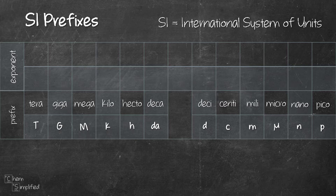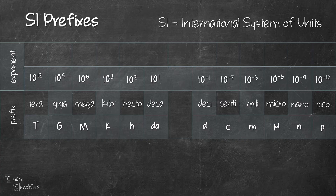Each of these prefixes has a special exponent value. For tera, its value is 10 to the power of 12 — that means it's 1 followed by 12 zeros. As you go from tera to pico, the value gets smaller and smaller, all the way to 10 to the power of negative 12. The 12 prefixes start with 12 and end with negative 12. 10 to the power of 0 is 1, and that's why we call it the base.